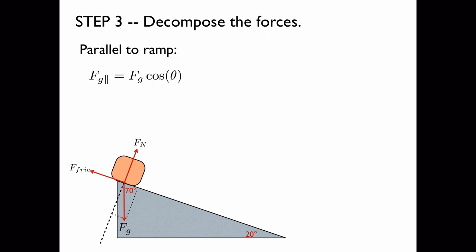From the diagram, you can see that the component of the gravitational force that's parallel to the ramp is adjacent to the angle 70 degrees. So we have to multiply it by the cosine of theta to get the component parallel to the ramp. We plug in the numbers, we get 16.8 newtons.